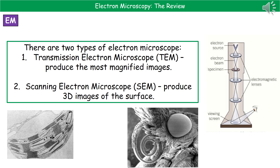The electron microscope is different to the light microscope in that, as the name suggests, it uses a beam of electrons. You don't have to know all the ins and outs of how it works, but you do need to know that there are two types of electron microscope. The first one is called a transmission electron microscope, or TEM, and this produces the most magnified images.